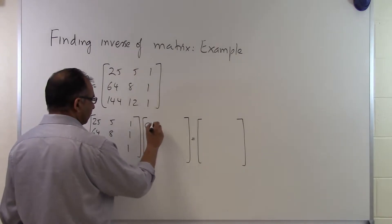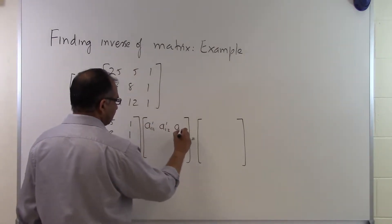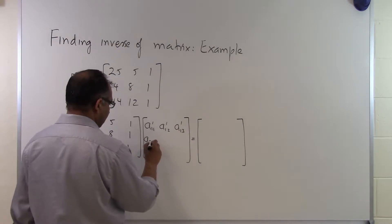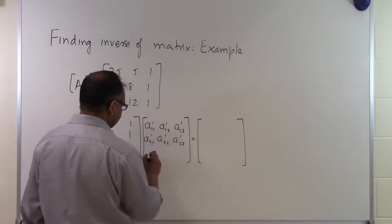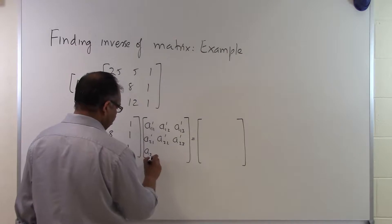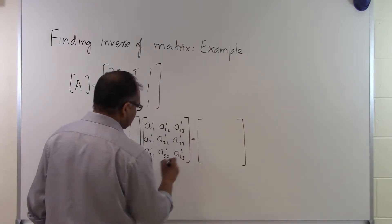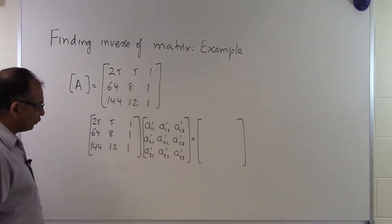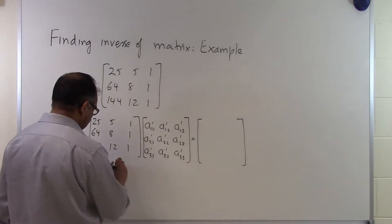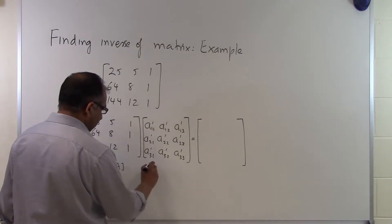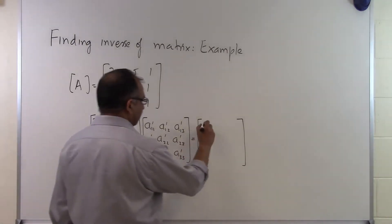So this will be a11', a12', a13', a21', a22', a23', and so on and so forth. This is the matrix of which you are going to find the inverse — this is A. This is A inverse, and this will be equal to the identity matrix.